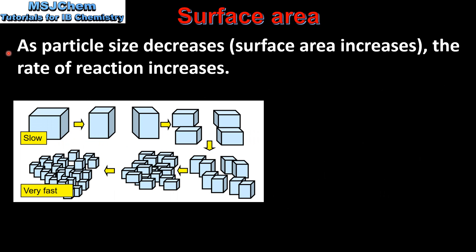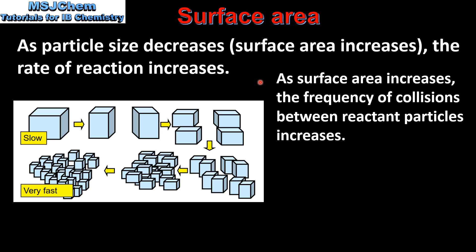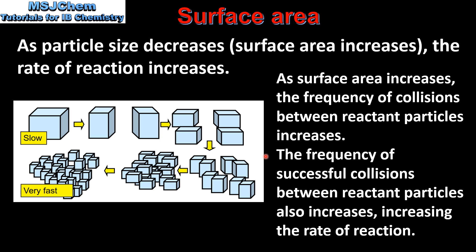Next we look at surface area. As particle size decreases, which means that the surface area increases, the rate of reaction also increases. As we can see from this diagram, large pieces of reactant particles react slowly and small pieces such as powders react very quickly. This is because as the surface area increases the frequency of collisions between reactant particles also increases, therefore the frequency of successful collisions also increases, increasing the rate of reaction.